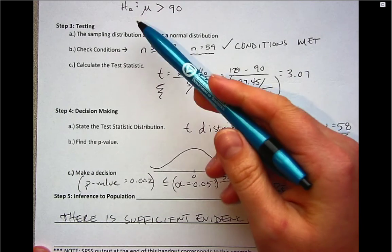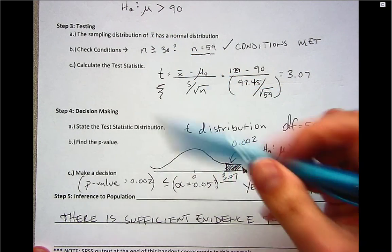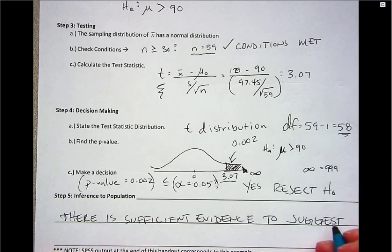So up here our alternative is mu greater than 90. So we're going to say there is sufficient evidence to suggest, and we defined mu as being mean time spent on phones per day by GVSU students.